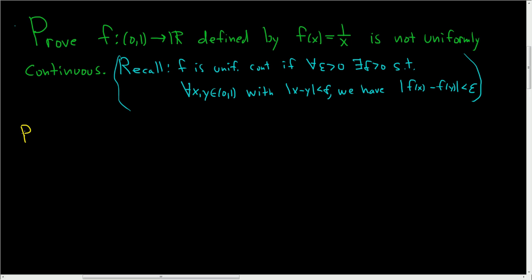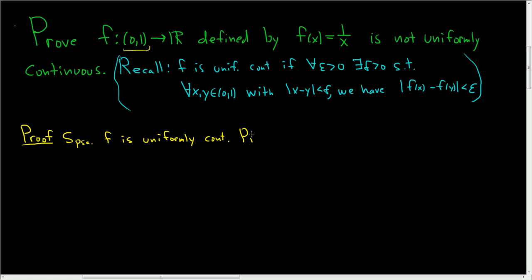Let's go ahead and prove it's not uniformly continuous. To do that, we'll use a proof by contradiction. We'll suppose it is. So suppose f is uniformly continuous on the interval (0, 1). And let's pick epsilon equals 1.